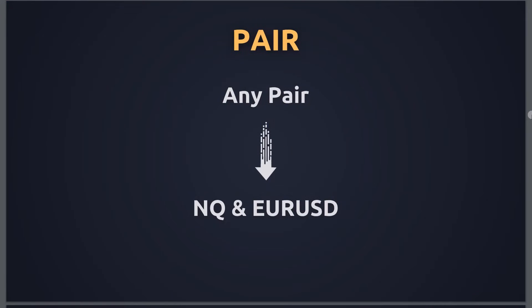First, the basic stuff, starting with pairs. What pairs can we trade this strategy on? Basically any pair you want. This strategy is specifically based on inducement, liquidity, and fair value gaps. Since liquidity is the fuel of all markets and fair value gaps work on any market, you can use any pair. However, I recommend NASDAQ and EUR/USD — but mainly NASDAQ. All of the examples I'll give today are on NASDAQ.